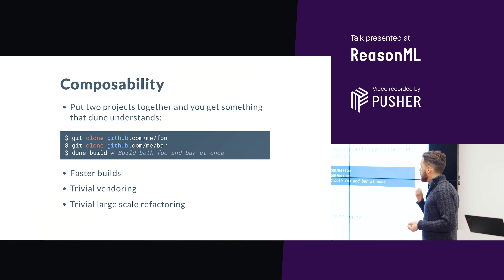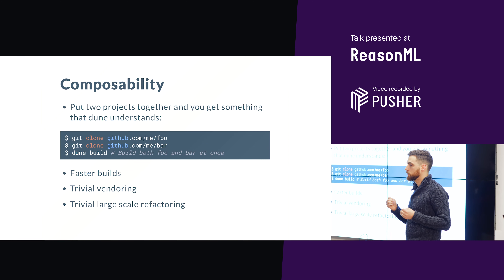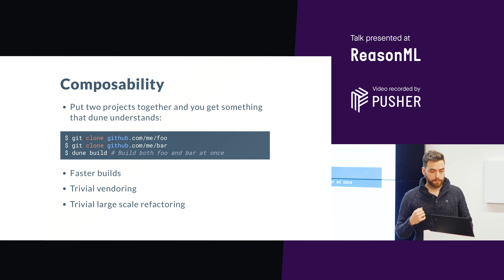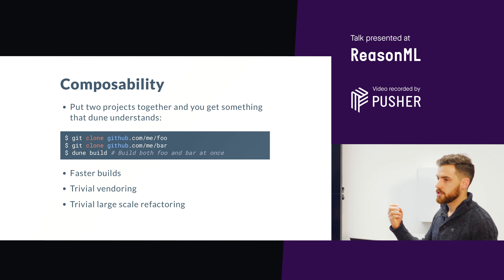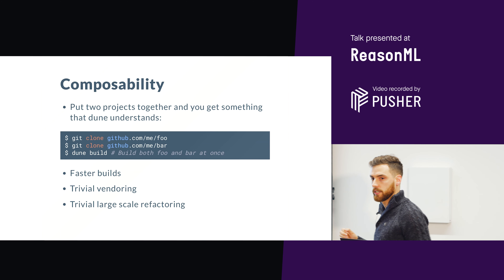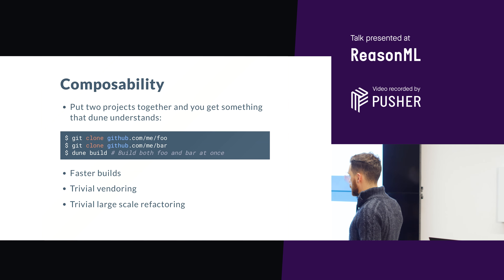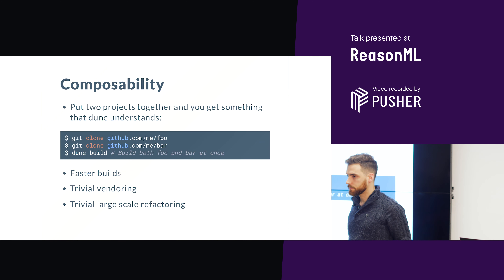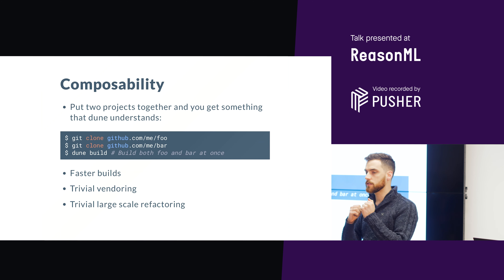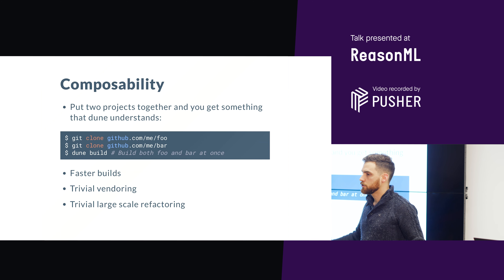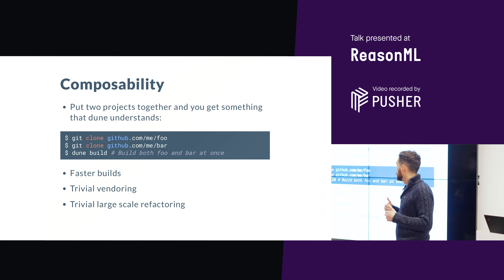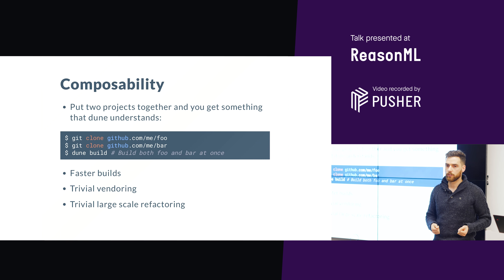One feature composability unlocks is large-scale refactoring. Imagine you have a library used by 100 projects and you want to do a breaking change. You clone your library and your 100 projects, make the change in your library, and ask Dune to build everything. You'll get compilation errors because of the breaking change — you just follow them one by one, upgrade the code to match your library, and just like that you can upgrade everything at once.